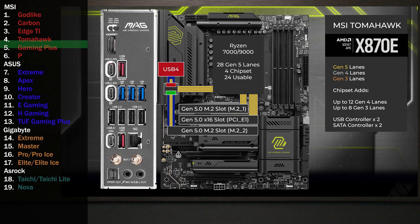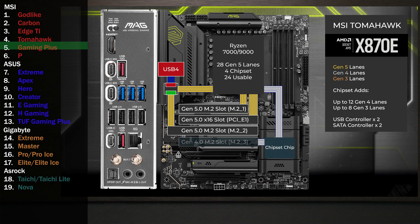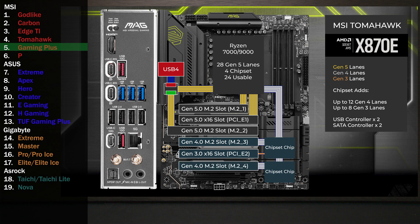In the BIOS, USB 4 can be disabled, sending all four lanes to the M.2. The chipset connects to the CPU with the four-lane uplink. Four lanes go to a third M.2. One lane goes to a x16 slot. The first chip connects to the second, and four lanes go to the fourth M.2. Finally, four lanes go to a x16 slot.